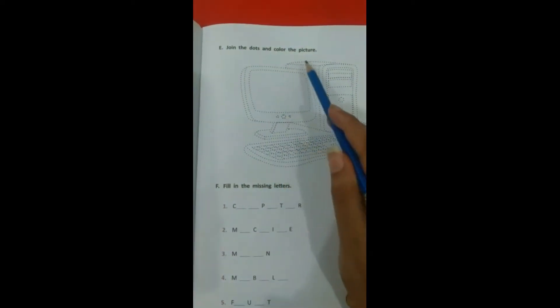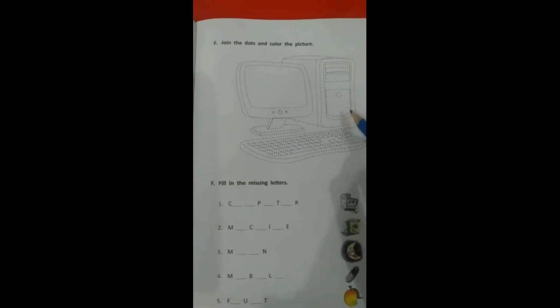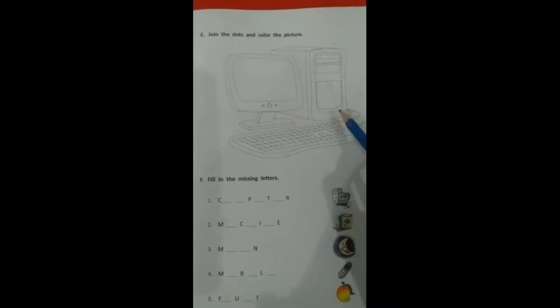Join the dots and color the picture. You have dots given here. You can join it and draw it. Then you can color it. Now we have to do exercise F.